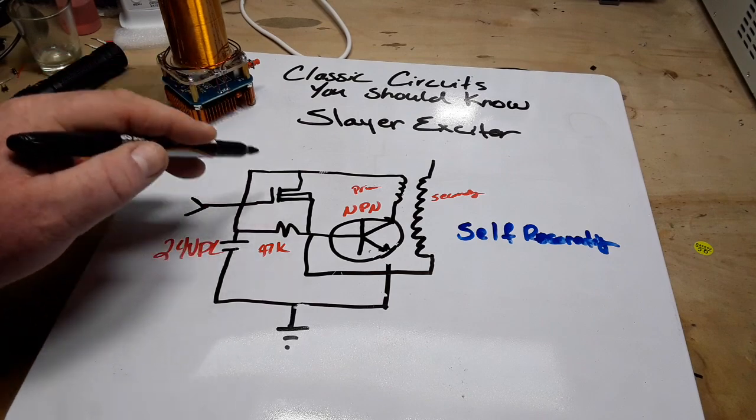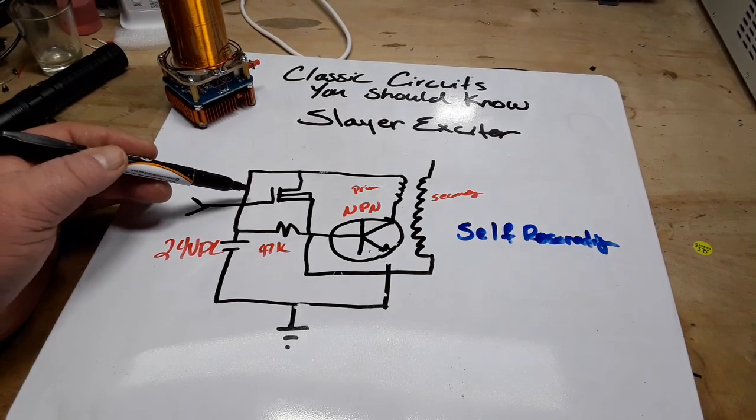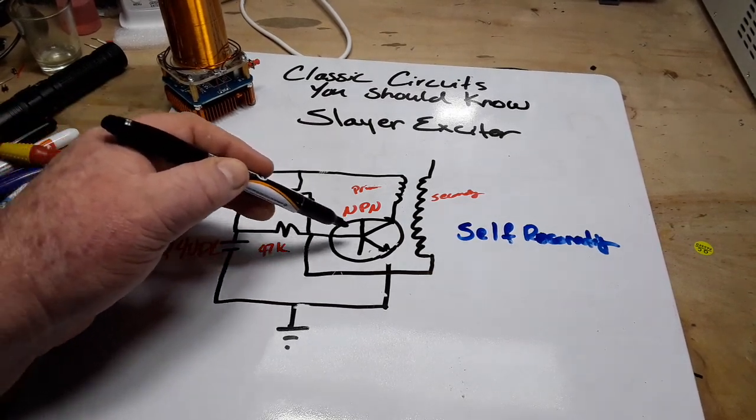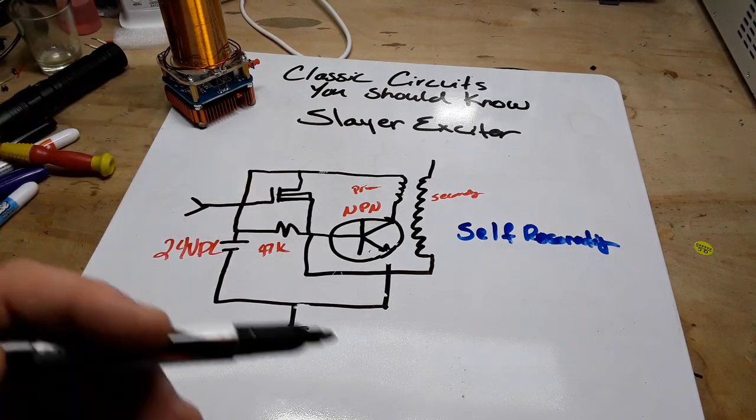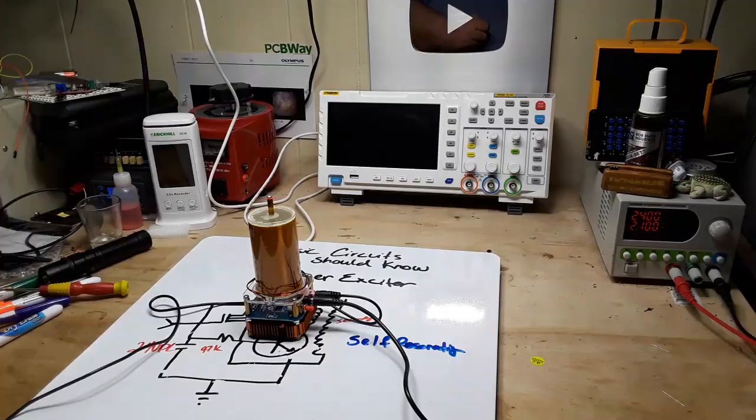And then the gate on our MOSFET is where our audio signal comes in. I mean it's a little more involved than this, but this will give you a basic idea. So the audio signal comes in and now it can modulate the amplitude and the frequency at which this circuit is switching on and off and give you some music out of your Tesla coil. Let's take a look at that, that'll be fun.